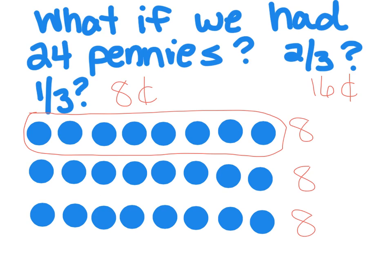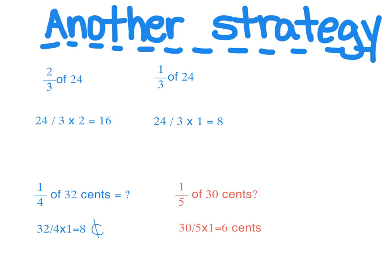Okay, so this is one way that we can figure out the fraction of money. Or even if it weren't money, if it were objects, we could find the fraction of with pictures. Another strategy that we can use is some division and some multiplication. So I've got four examples here on this slide, and you'll notice the first one says two-thirds of 24.